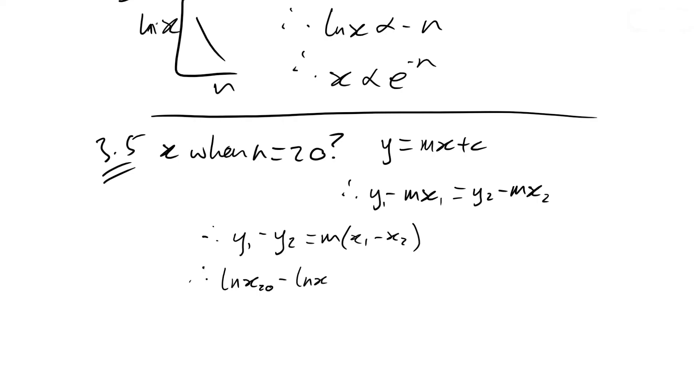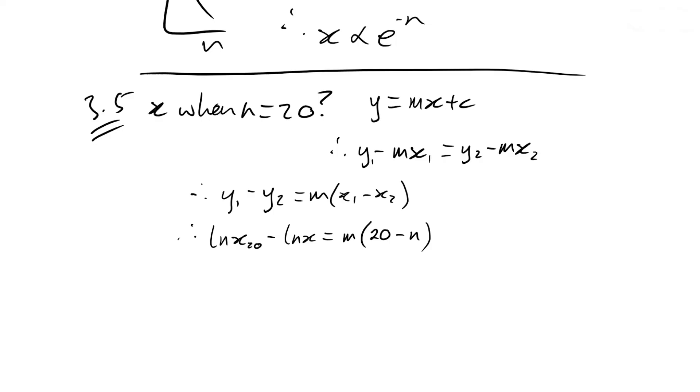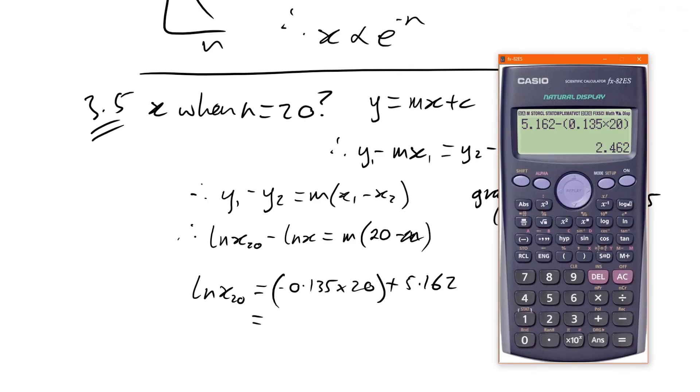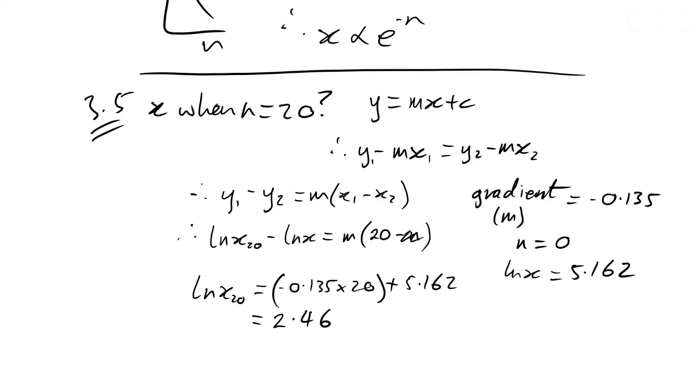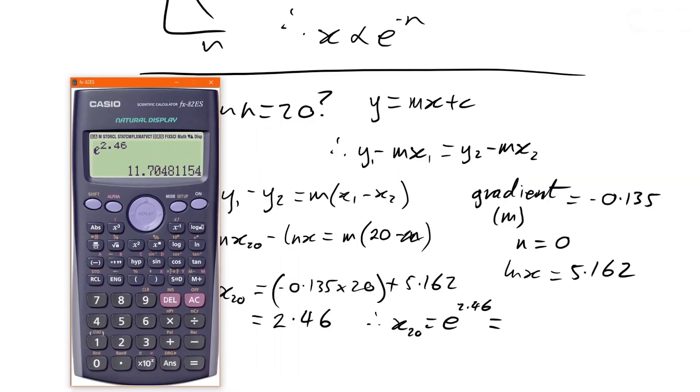So what are we going to put in here? Well, first of all, our gradient m we end up with something like -0.135. What values are we going to use? Well, we might as well use n = 0, makes things a bit easier because then that disappears. Log of x for that was 5.162. Okay, so next we just need to rearrange this. Log of x at 20 is equal to -0.135 times 20 plus 5.162, and we end up with 2.46. So log of x of 20 is that, therefore x at 20 is equal to e to the 2.46, and that gives us 11.7 centimeters.